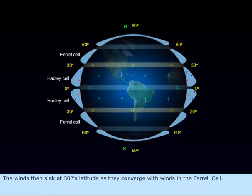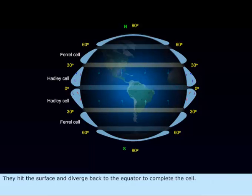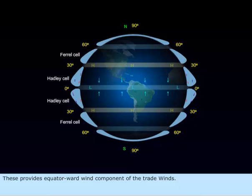The winds then sink at 30 degrees latitude as they converge with winds in the Ferrel cell. They hit the surface and diverge back to the equator to complete the cell. This provides the equatorward wind component of the trade winds.